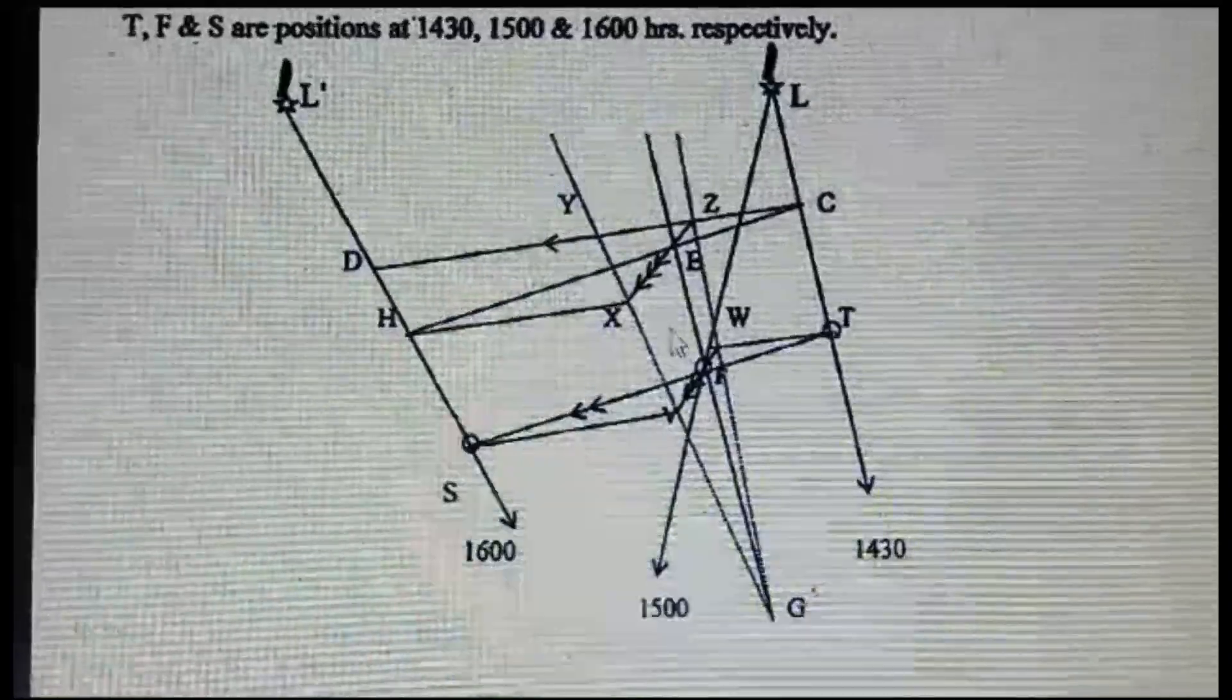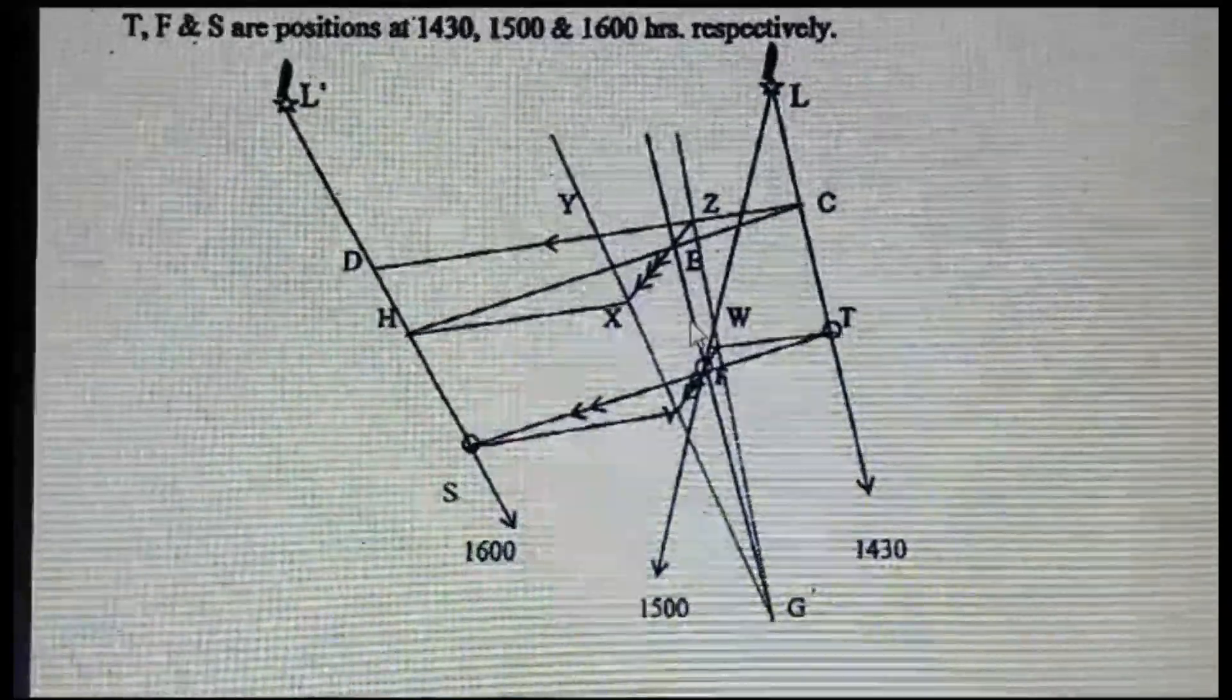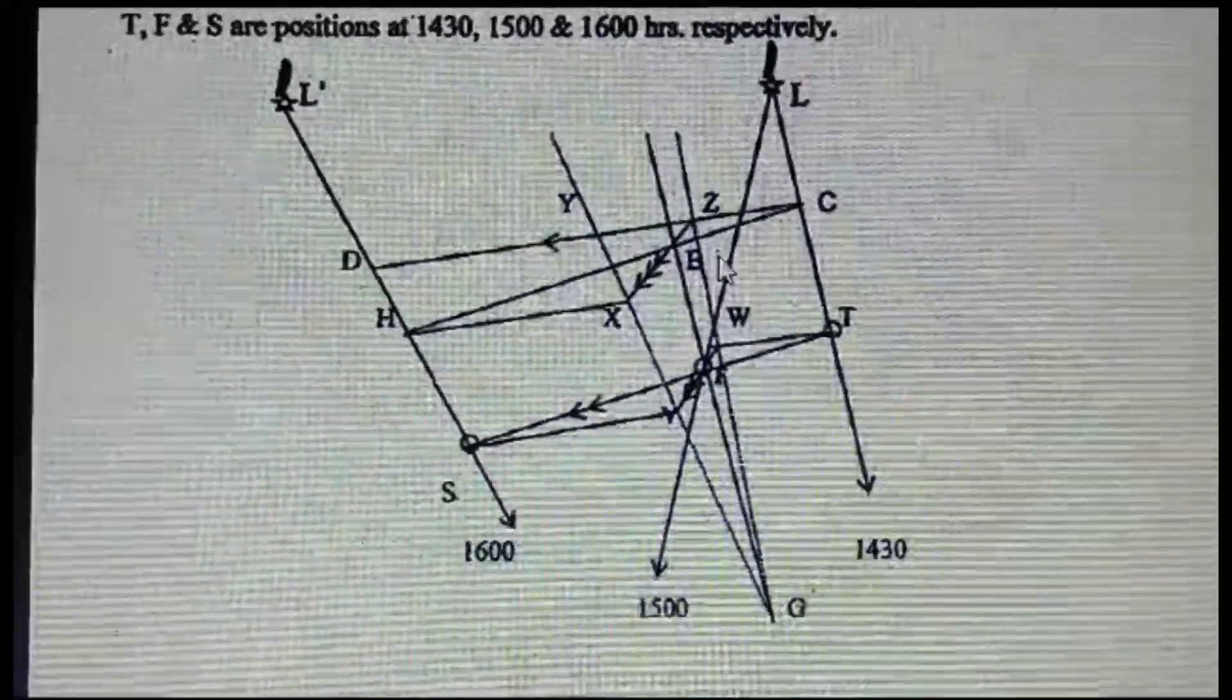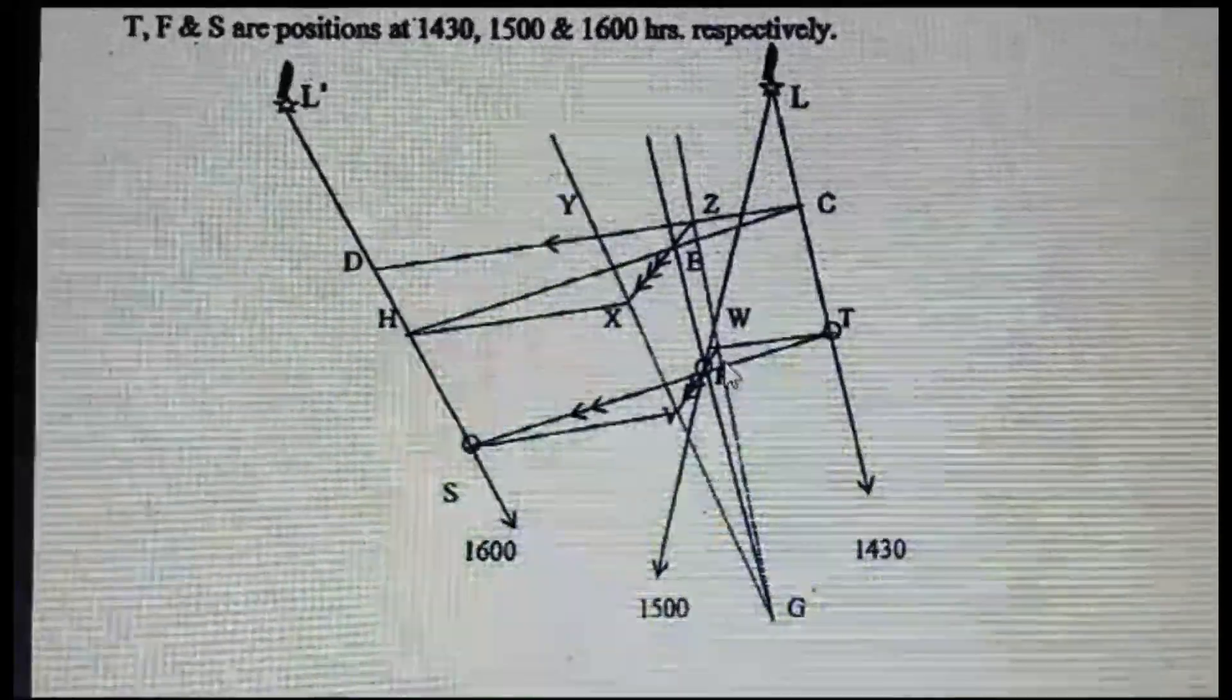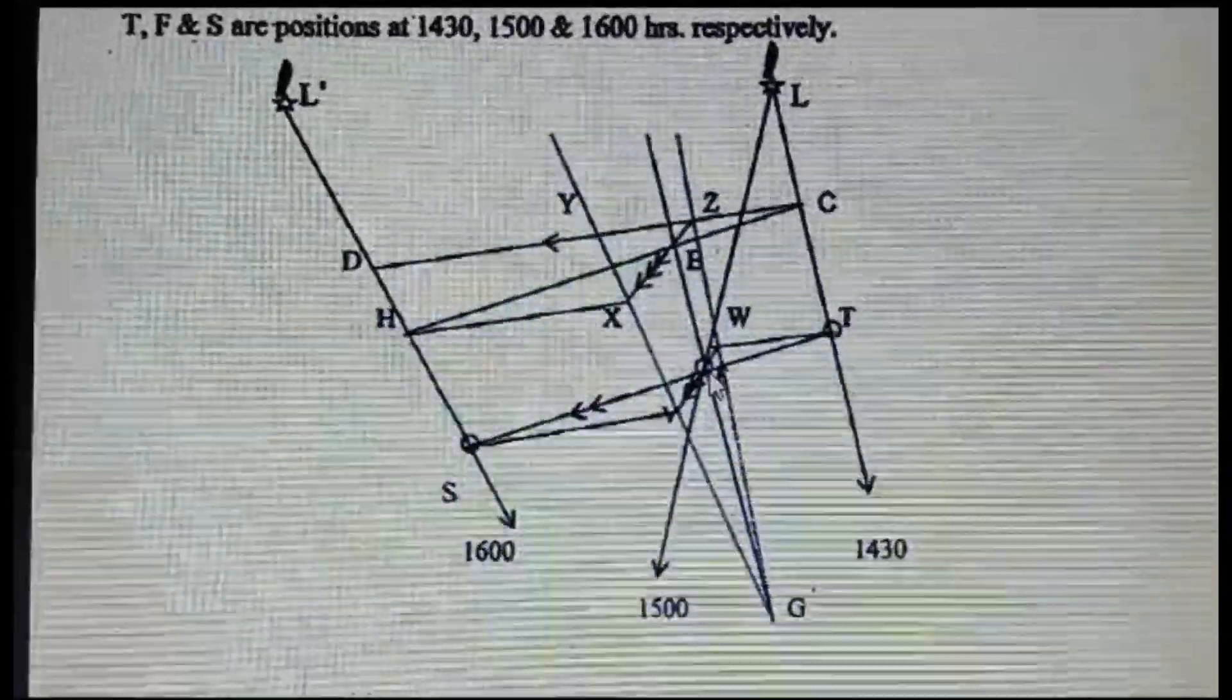Okay, so now it has passed. Now what we have to do: since you know when two PLs - basically this is a PL only - when two PLs are passing, that will be a position. So now this line is cutting the second, so this is the 1500 position we got.